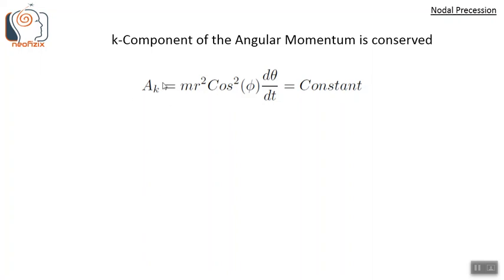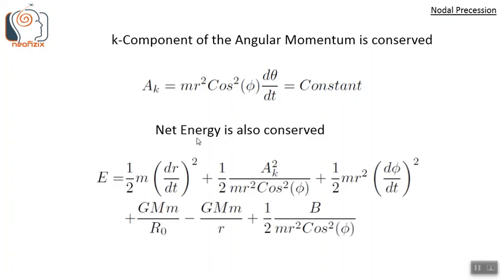In this process, the k-component of angular momentum is conserved. A_k is defined as equal to mr² cos²φ (dθ/dt), and this quantity is a constant determined by the initial conditions. The net energy E is also conserved: E = ½m(dr/dt)² — the radial kinetic energy — plus ½A_k²/(mr² cos²φ), which is the zonal kinetic energy, where A_k is the constant k-component angular momentum.